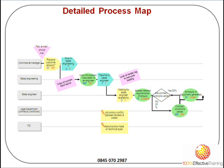By doing a detailed process map, we can then identify many things, including durations, who did it, why they did it, what roles they had, what measures of performance they have, as well as identifying each and every part of waste within that process.